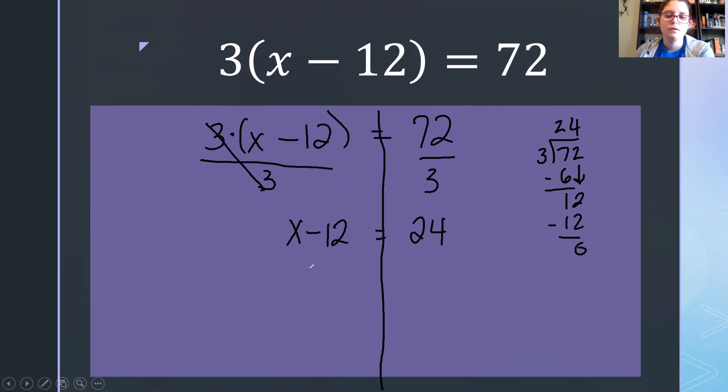I undo subtraction with addition. So negative 12 and a positive 12 cancel to make a 0. So x equals 36.